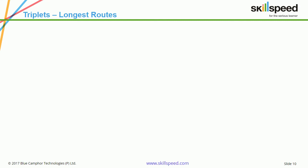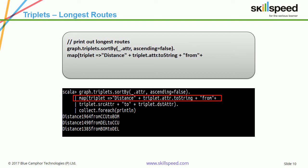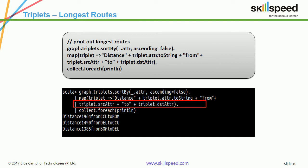If we want to figure out the longest routes in our graph, we can do graph.triplets.sortBy with ascending set to false, meaning we sort in descending order. Then we map every triplet and print the distance and the triplet attribute, along with the source and destination attributes as strings. This clearly shows the distance between each airport.